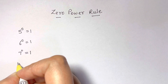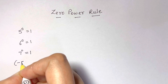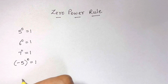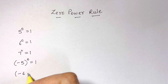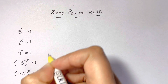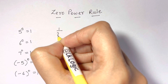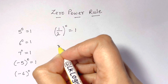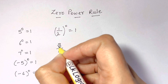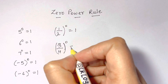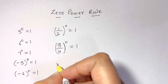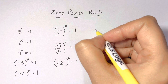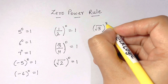I have taken all positive numbers — they all equal one. Now let's take negative numbers: negative five to the power of zero equals one, negative six to the power of zero also equals one. These are integers. If you take non-integers also, like one-half to the power of zero equals one, or three-fourths to the power of zero equals one, or even irrational numbers like square root of two or square root of three to the power of zero — all equal one.